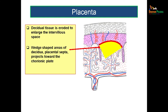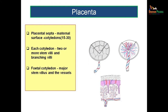The region between two placental septa is called a cotyledon. You can see the cotyledons when looking from the maternal surface after the placenta detaches from the uterine cavity. The maternal surface does not appear as a smooth flat surface but as different polygons due to the presence of placental septa. Roughly 15 to 30 cotyledons are expected on the maternal surface, and each cotyledon has two or more stem villi with branching villi.